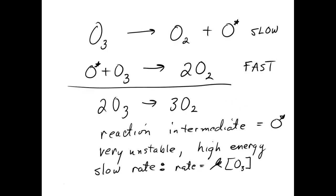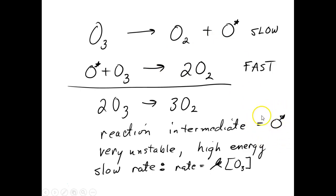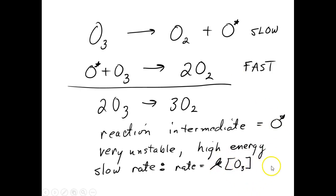The destruction of ozone in the ozone layer — converting O3 into O2 — is normally a pretty slow reaction, and that's why we normally have a nice thick ozone layer protecting the earth. If you look at the steps, our reaction intermediate is elemental oxygen, which is very unstable but doesn't form very often. O3 is unlikely to split into O2 and a lone oxygen, so it's a slow reaction with a rate that depends on the concentration of O3.